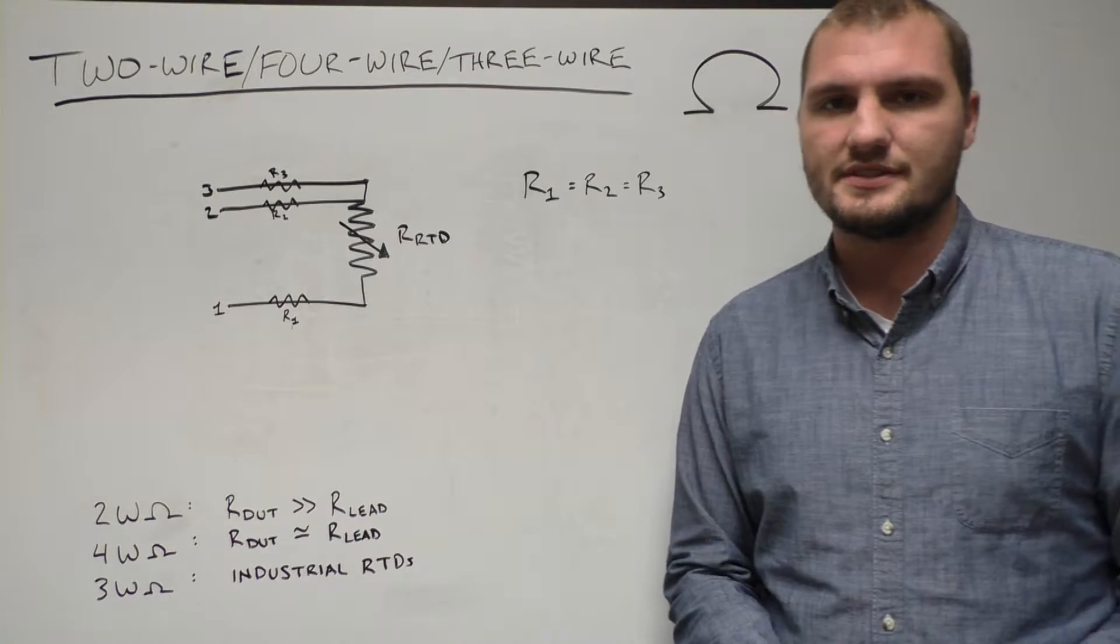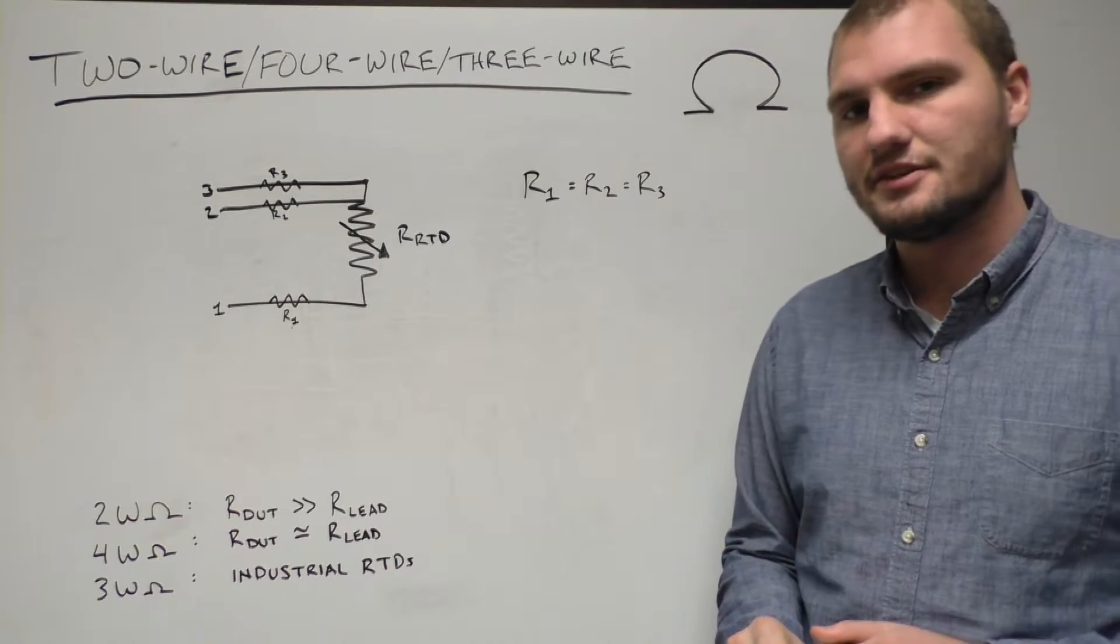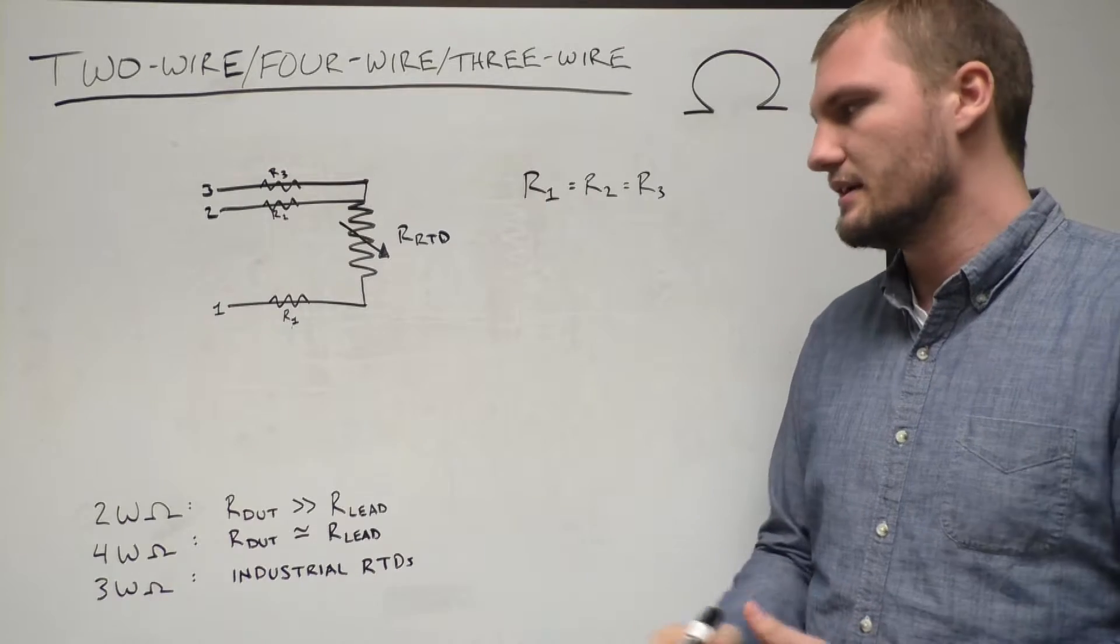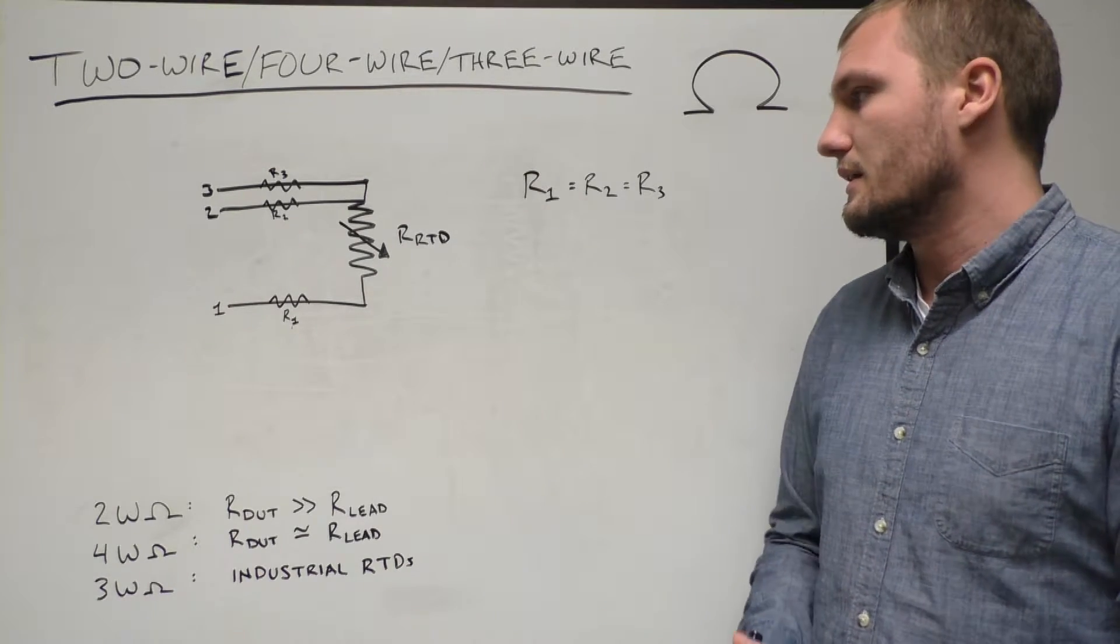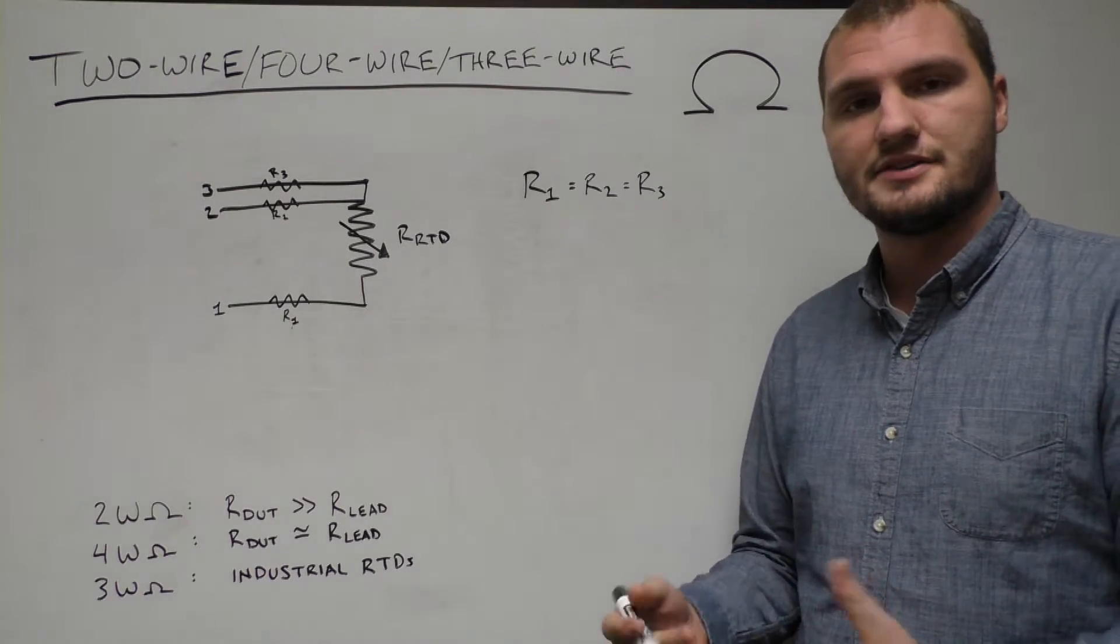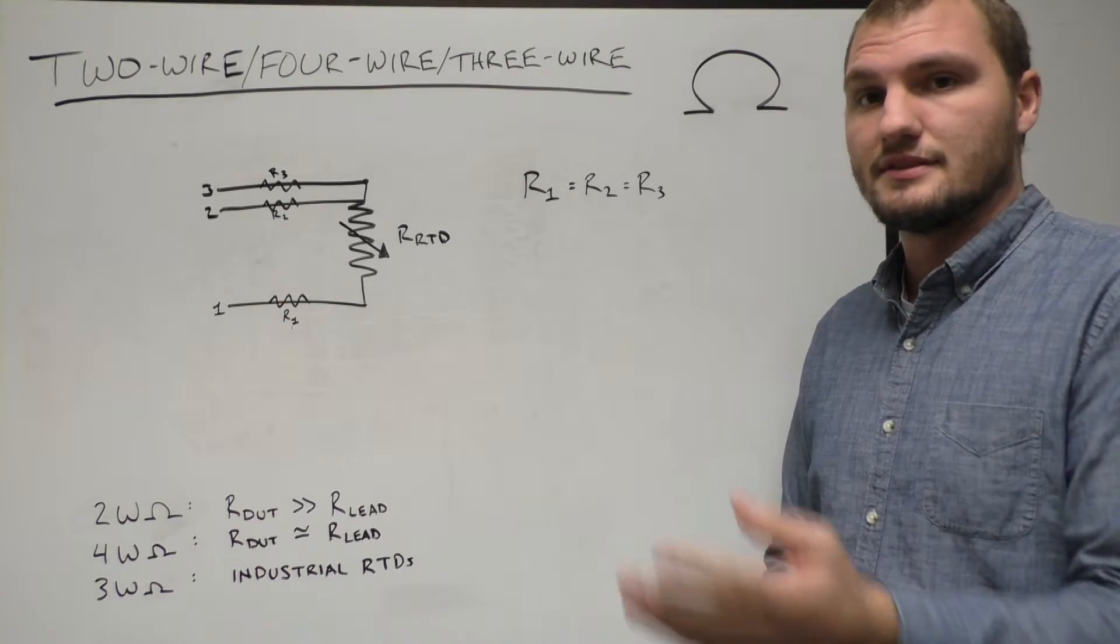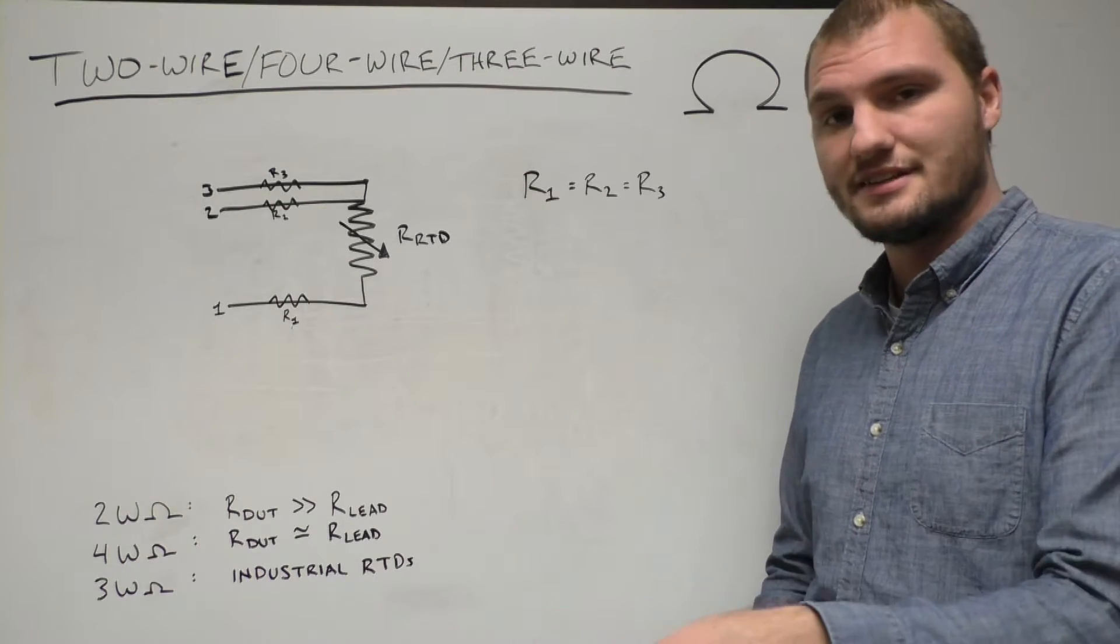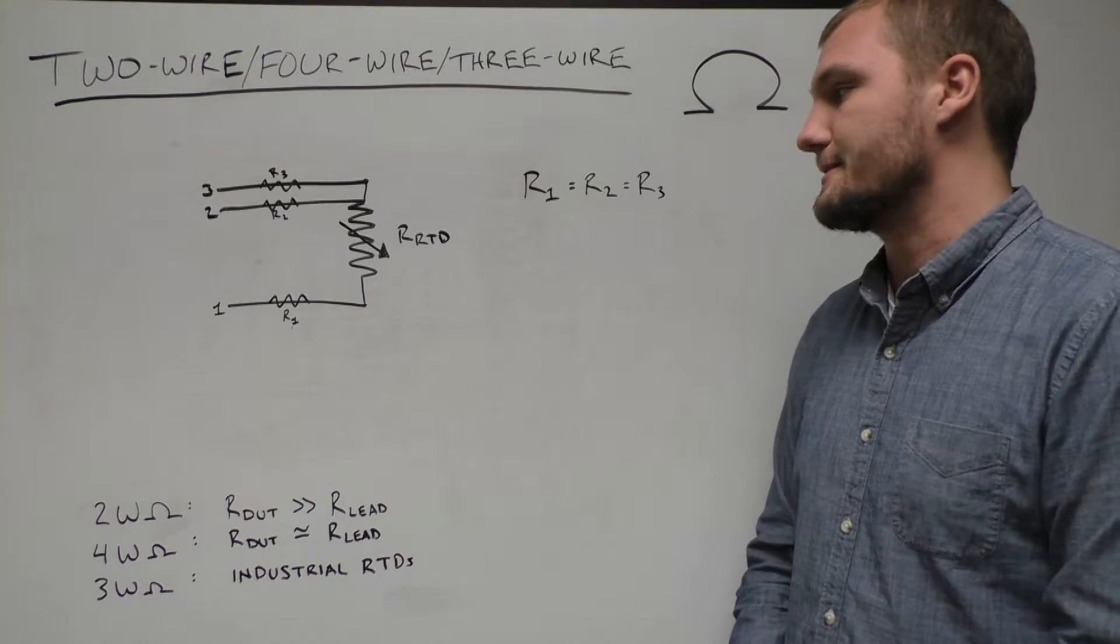The third resistance measurement technique is 3-wire, and this isn't commonly used for typical resistors, it's more often used for industrial RTDs. This method is similar to 4-wire in that it gets you that same accuracy for low resistance devices, but it uses 3-wires rather than 4, so there's less connections and slightly less cost in producing. So that's why it's fairly popular in industrial RTDs.